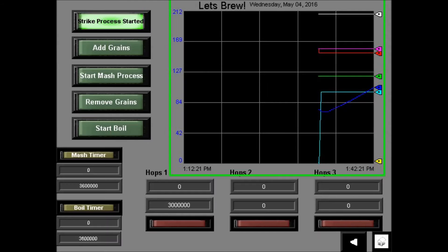In the main brewing display, there is a series of buttons for the user to follow along with a visible mash timer, boil timer, and hops 1, 2, and 3 timers. As well, there are indicator lights.